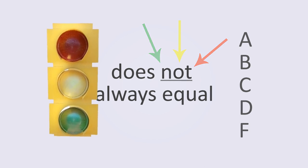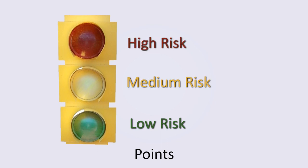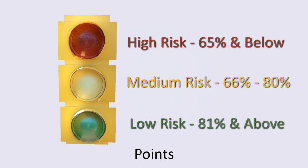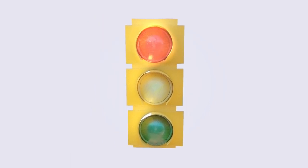For the first factor, points, your instructor sets a range for what grades they consider low risk, medium risk, and high risk of not succeeding in the class. Different instructors will have different ideas of what grade goes with what risk. If your grade falls into the high risk category, you'll automatically receive a red signal.